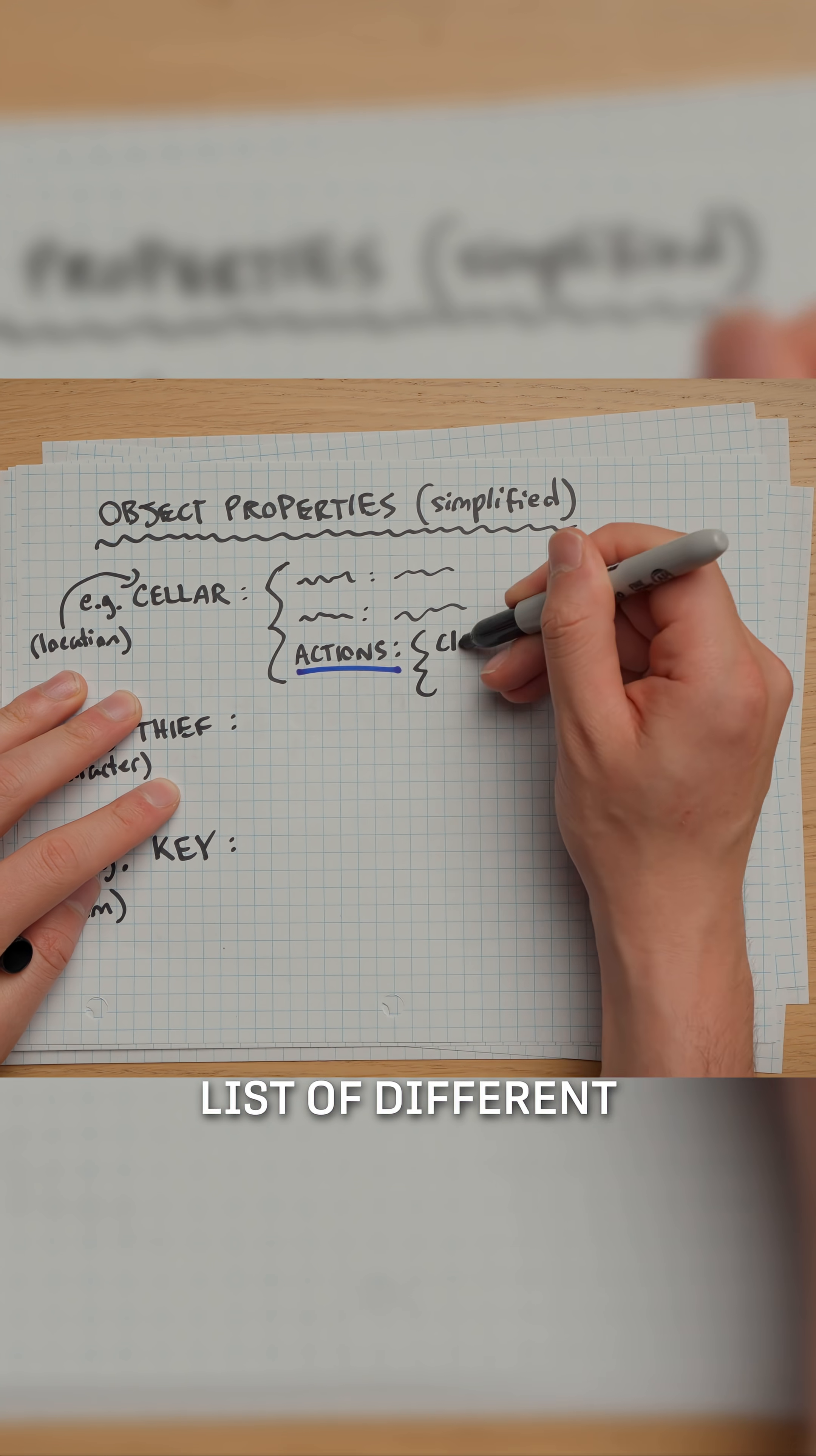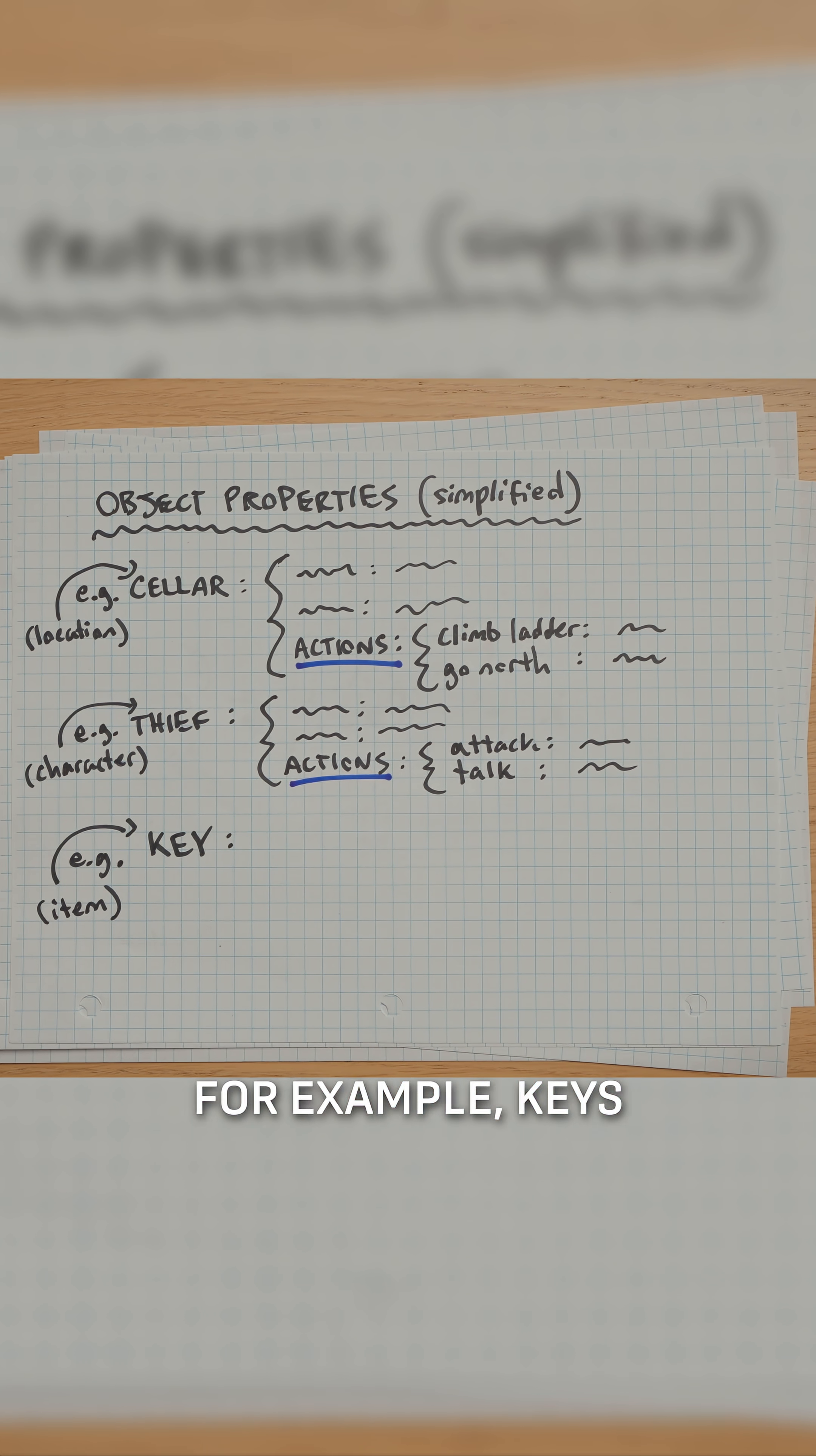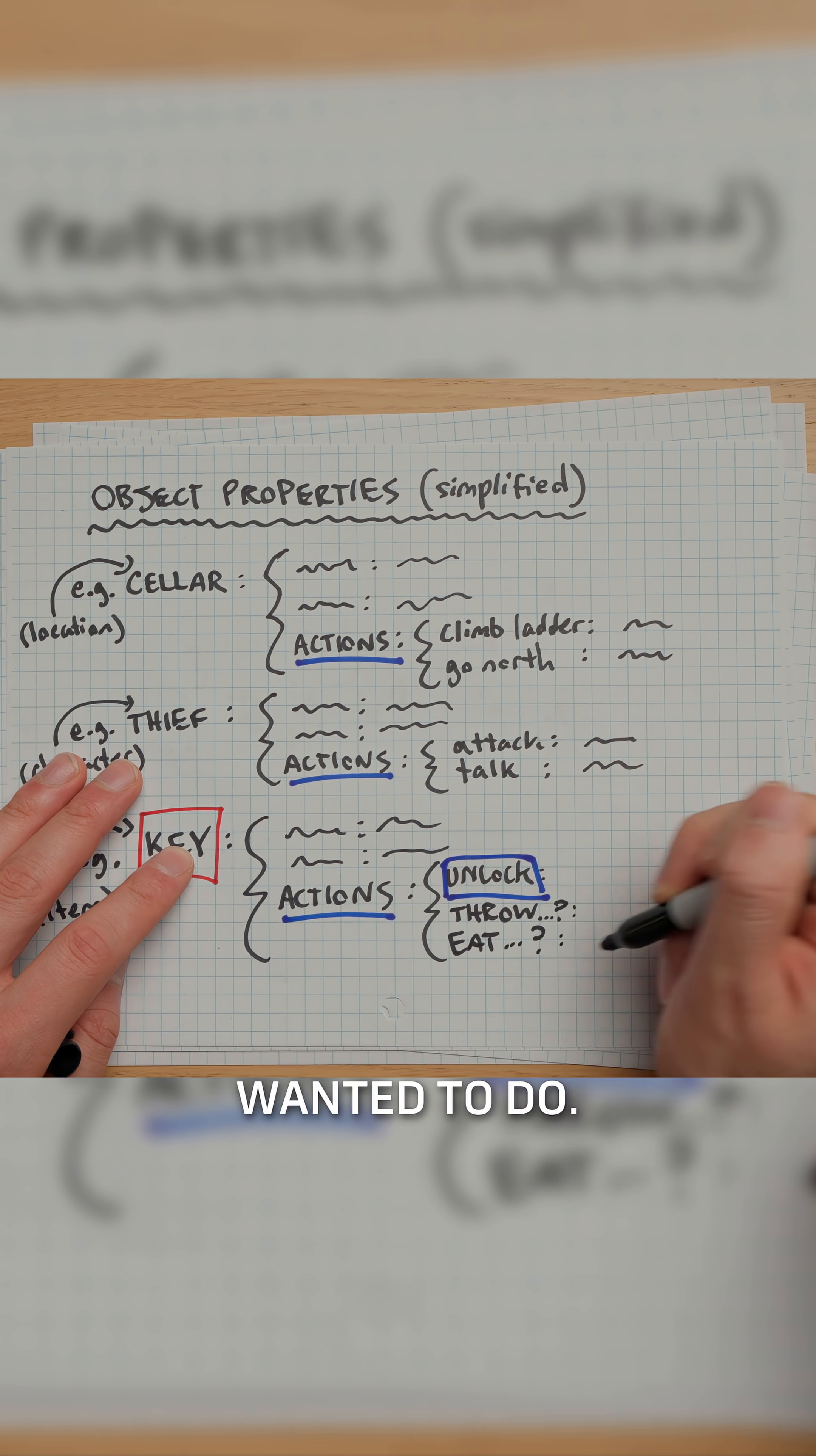And each one of them is associated with a list of different actions that can be performed with or on them. For example, keys can unlock doors. They could also be thrown if that was something that you wanted to do.